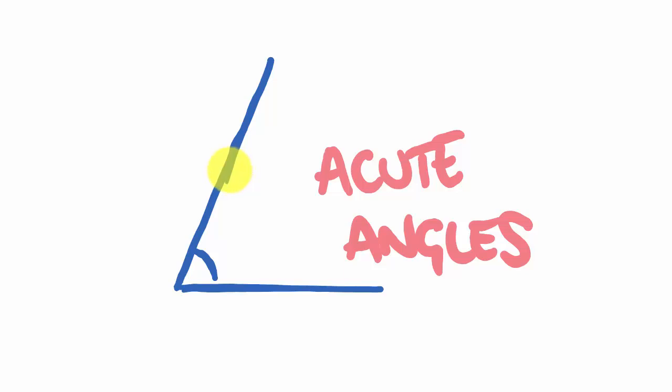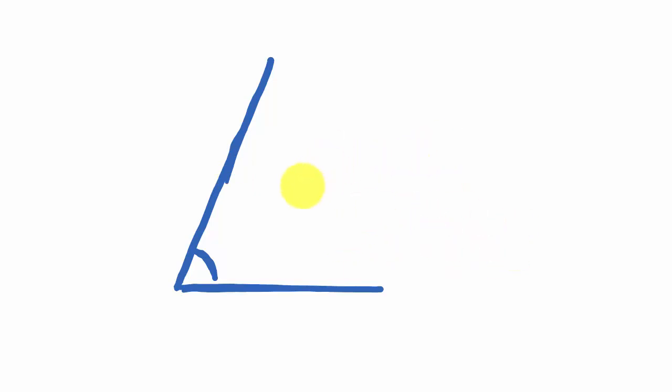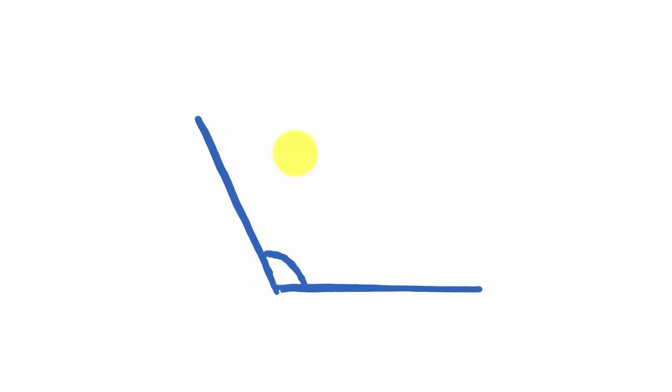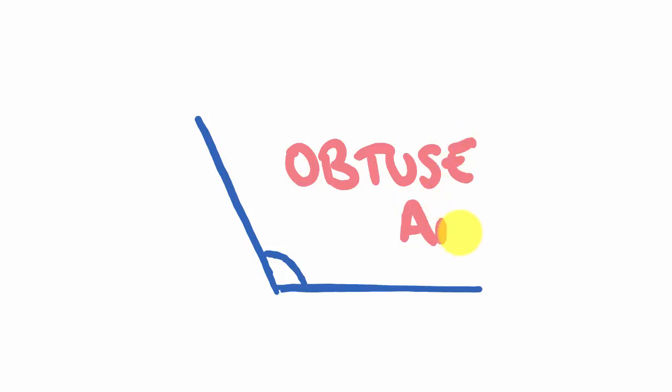A third type of angle is where we increase the size of our arms, so they get further and further apart and the angle gets bigger than a right angle — it opens up like this, beyond ninety degrees. An angle like this is said to be obtuse. So we now have three types of angles: acute, right, and obtuse.